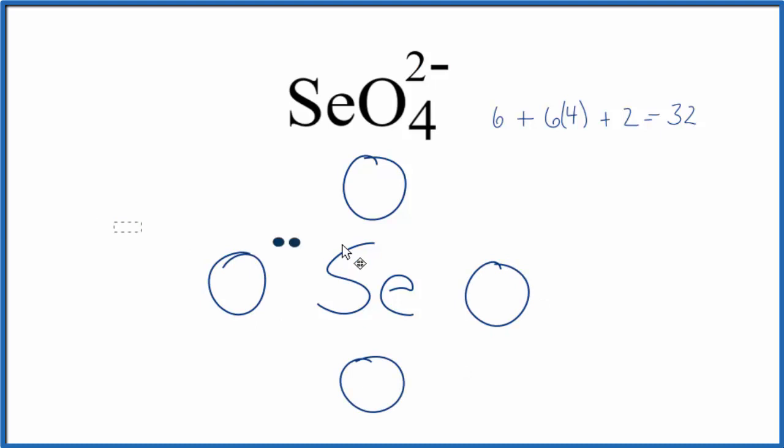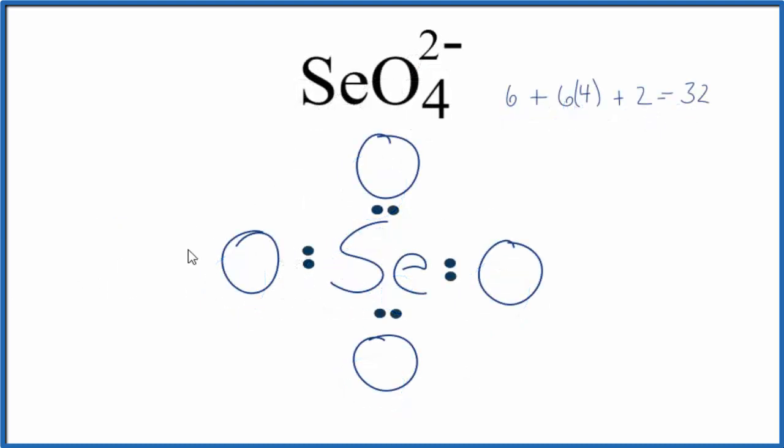Next, we put a pair of electrons between atoms. That'll form the chemical bond. Then we go around the outside and complete the octet on the oxygen atoms.